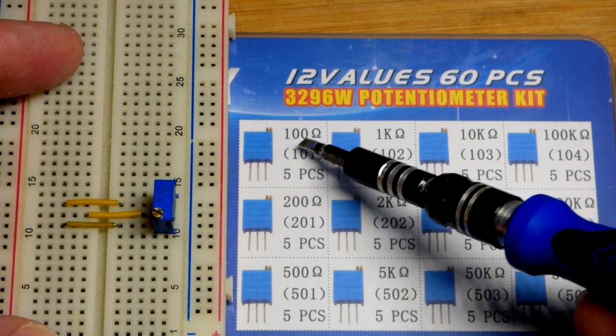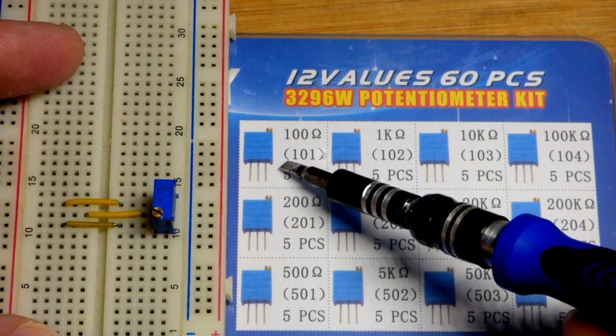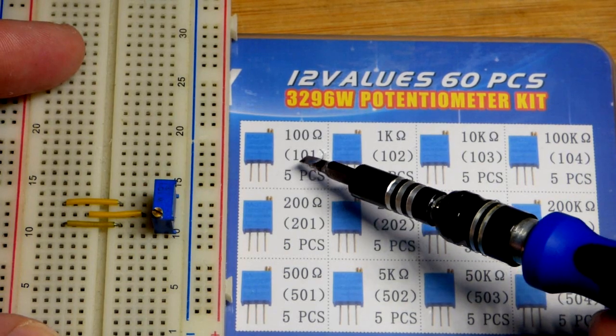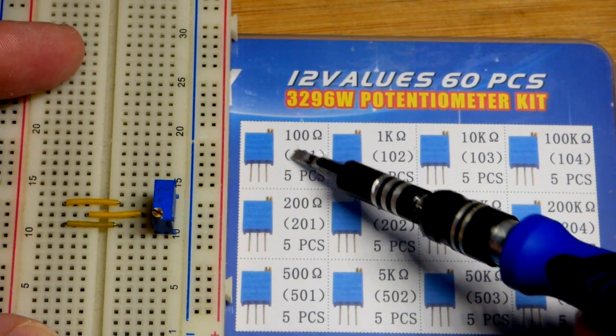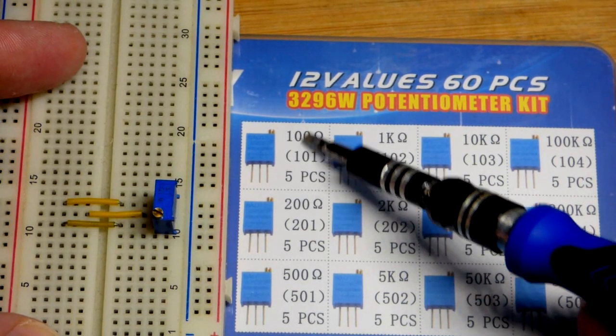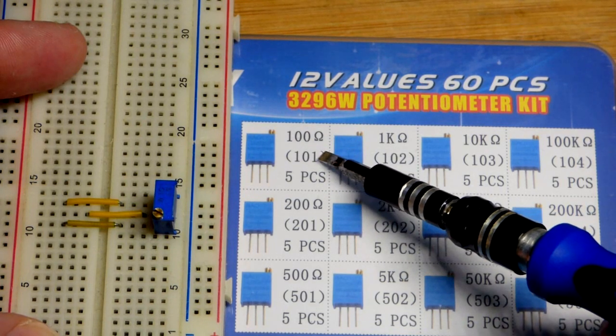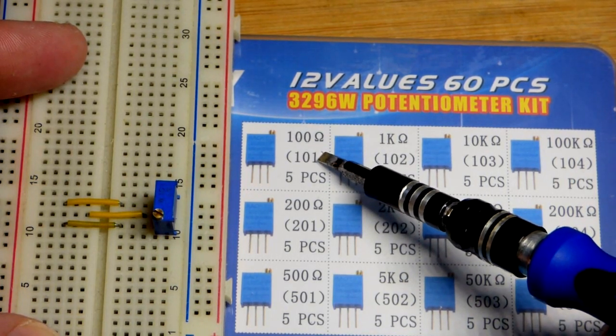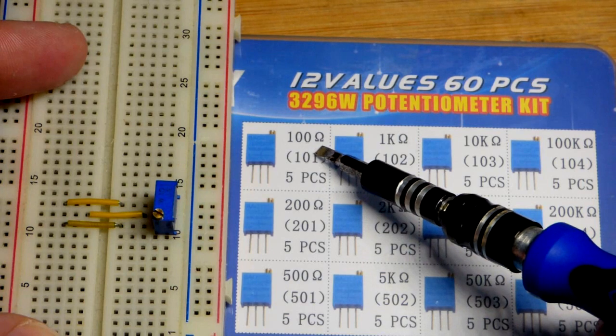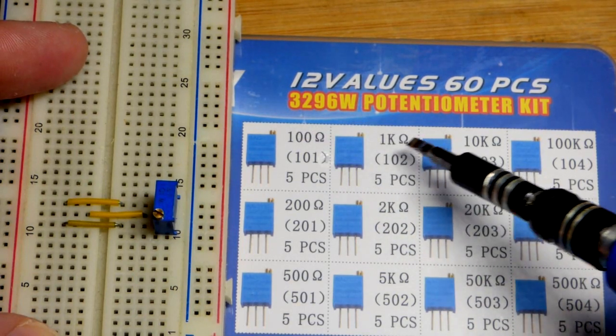These trim pots have a number written on them to indicate their value. This one says 101 right there. So what that means is you got a 1 for the value followed by a 0 for the value, and then basically how many more zeros you got after that. So 1-0 with one more zero is 100.